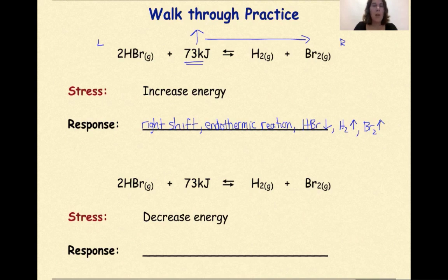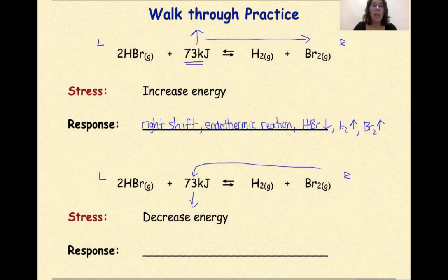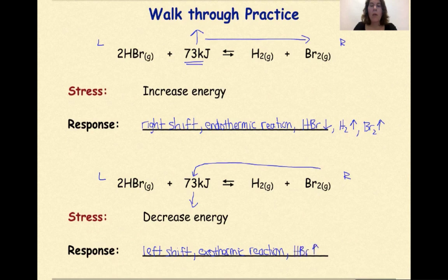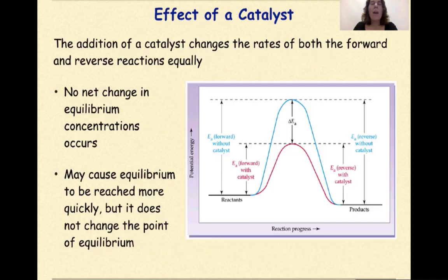Let's look at another example. This is my left, this is my right. Now we're decreasing energy — we're pulling 73 kilojoules of energy from the system. We have to shift to replace the energy that was lost, so in this case this will be a left shift. Energy is released out into the environment from the system to the surroundings, so this is an exothermic reaction. Since we are shifting to favor the formation of reactants, the amount of HBr will increase, H2 will decrease, and Br2 will also decrease.